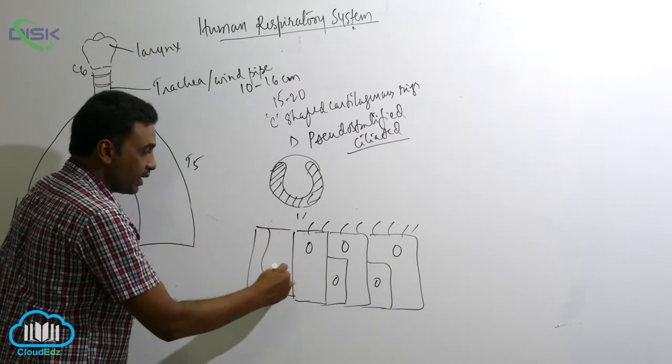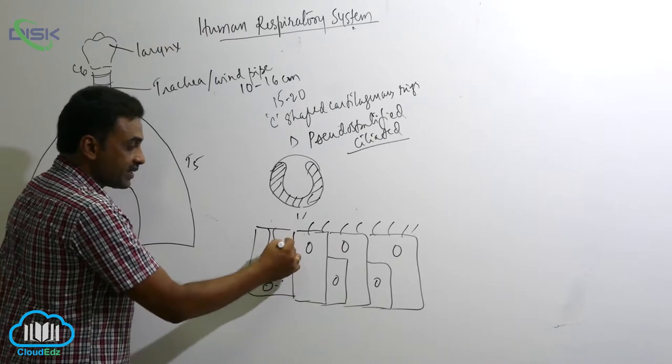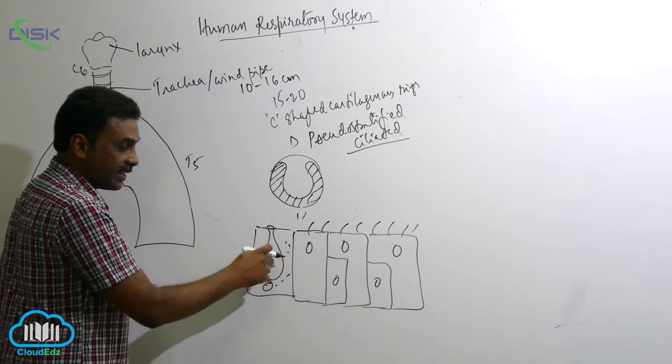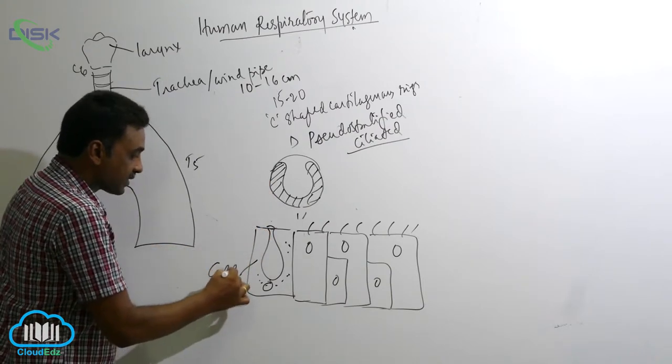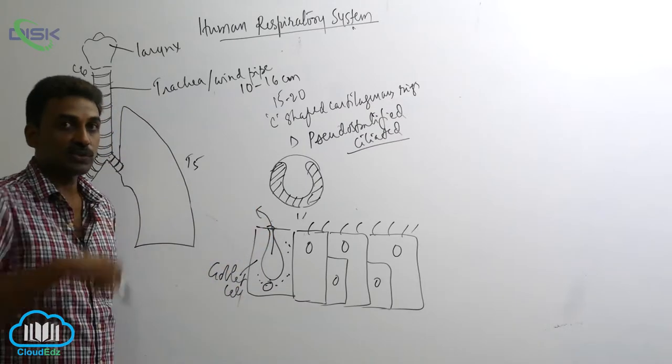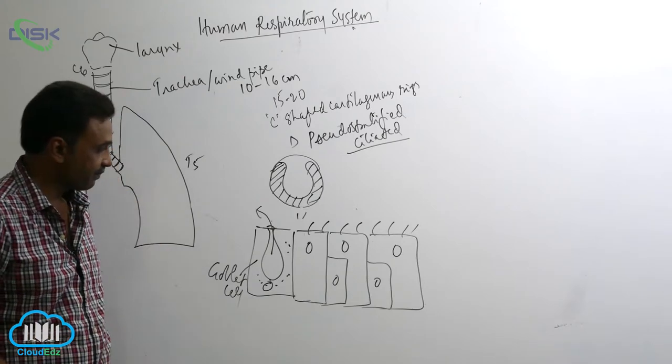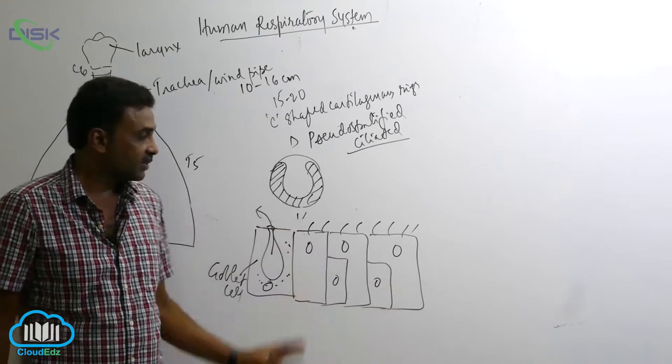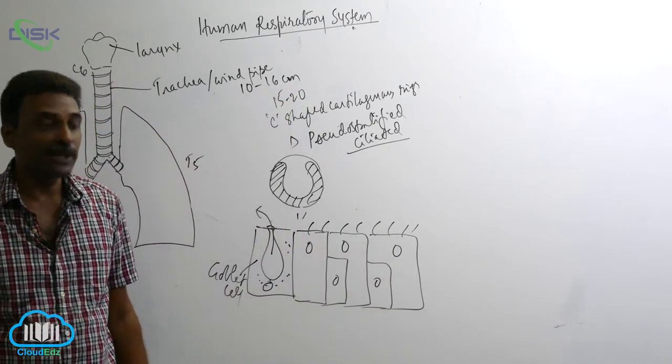Here and there you can see cilia. You can also find goblet cells. Goblet cells are like that - this is the cytoplasm and this is the cavity. There is a cavity inside. So this cell is called goblet cell. Goblet cell produces mucus. Here and there you will find goblet cells. And cells lining inside is pseudo stratified ciliated epithelium.